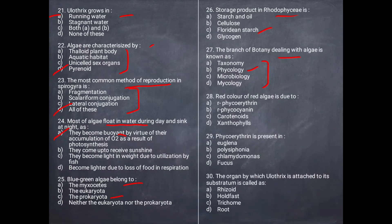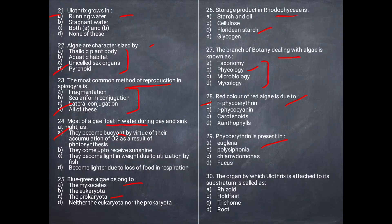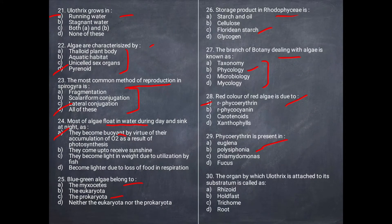Next question: Red color of algae is due to what? Red algae get their color from Phycoerythrin. Which red algae is in these four options? Polysiphonia — Polysiphonia is a member of Rhodophyceae where Phycoerythrin is present.